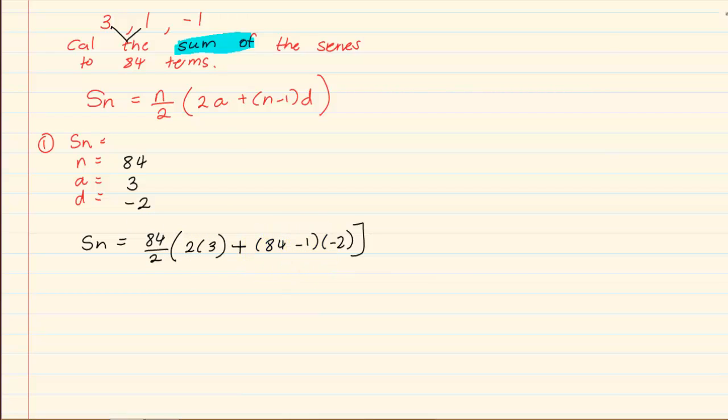It's 84 over 2 open brackets 2 times 3 plus 84 minus 1 close brackets open brackets minus 2 close brackets. When you're using your calculator you must be careful that you press it into the calculator exactly as you see it here. Wherever there's an open and close bracket you need to put an open and close bracket.